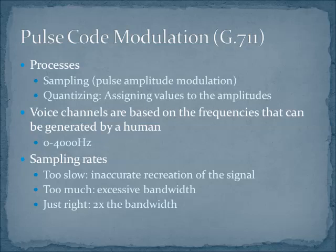There are a couple of parts to the process. First, we have the sample of the voice signal, and then we have to quantize it, or apply values to these signals based on their amplitude. A voice channel or a telco system is based on the frequencies that can be generated by a human. When we talk about human communication, there are two sets of frequencies. One set is the frequency that we can hear — up to about 20,000 hertz. Then there are all the sounds that you can generate, which are a subset of those you can hear, about 0 to 4,000 hertz. The channels for communication are based on what we can say. You take this voice signal that you're speaking and you have to now sample it.